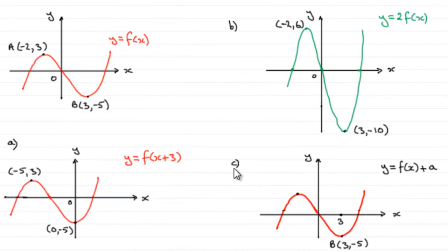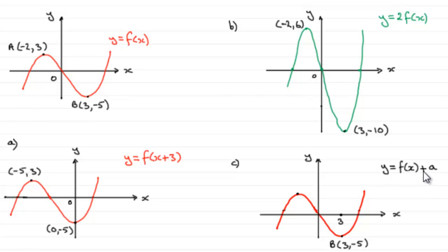Now in this last part, part c, we're told that the graph of y equals f of x plus a gives us a new graph where the minimum is at the point 3, 0. To find the value of a, we have to realise that when you add a to the graph of y equals f of x, it's going to translate it upwards by a value of a units.